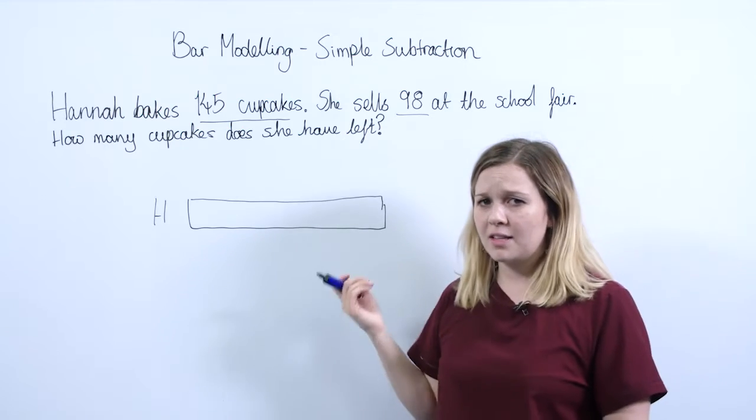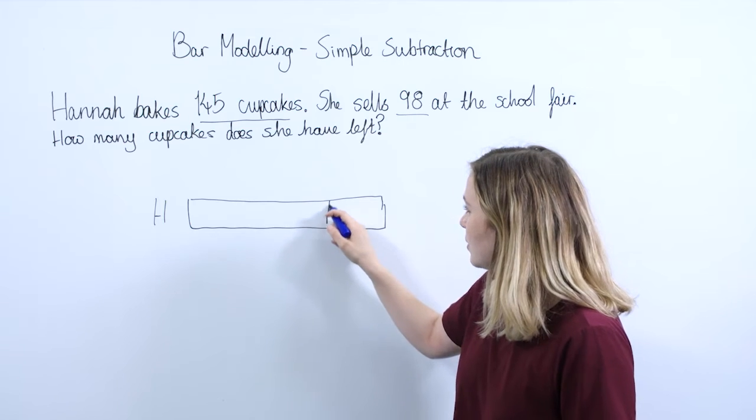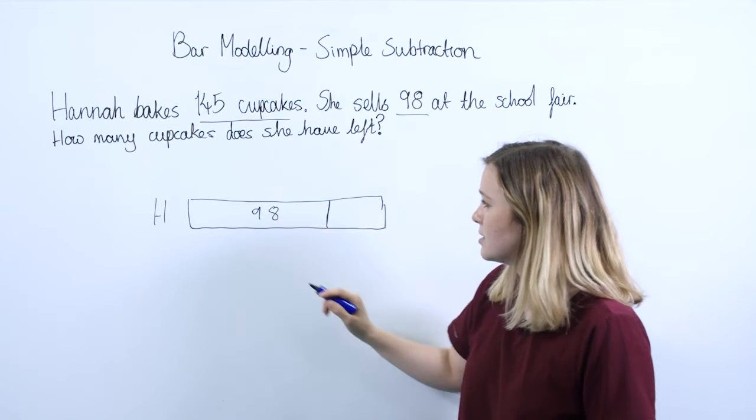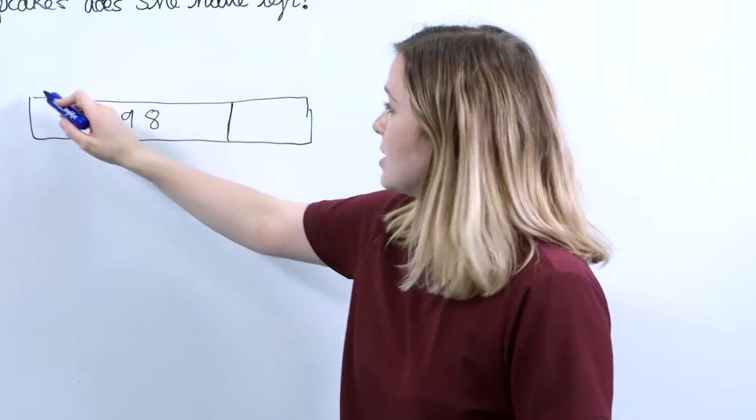So we want to mark this on the bar. I'm going to put roughly here we're going to say that Hannah sold 98 and they can label these parts so that pupils understand what's happening.